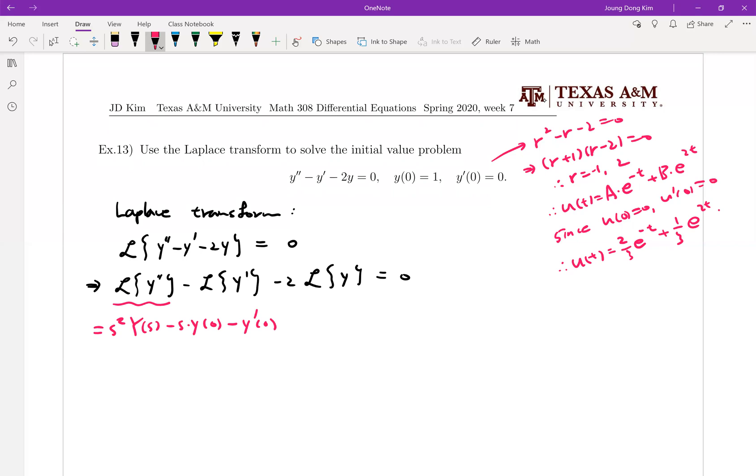This is s squared and s y s minus s of y zero and minus y prime zero. Then we assume where y t is equal to y s. And what about this guy? That is just simply s y s minus y zero. And this one is y s.